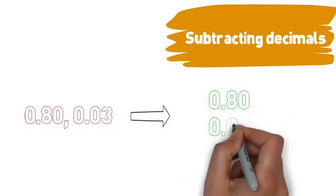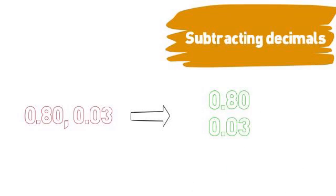The first thing I am going to do, is put the decimals on top of each other, once again, as I did when I added them up. 0.8, 0.03.